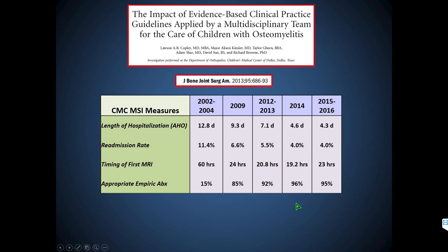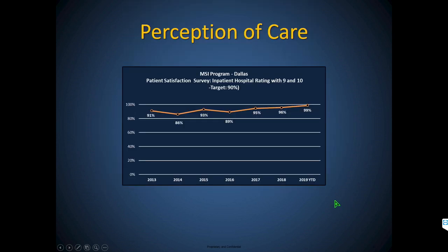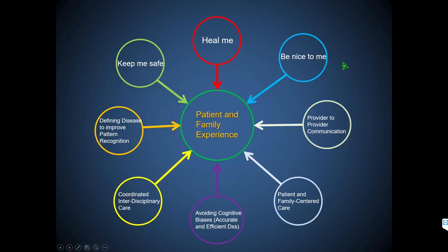Since implementing patient and family centered care with better understanding of disease processes and improved care processes, we radically reduced length of stay to as low as 4.3 days, cut readmission rate and kept it low, continue getting MRIs using our process, and improved both selection of appropriate empiric antibiotic and timing of administration. Families like this program — in 2013 we started the NRC Picker satisfaction survey, and we've continued to improve the percentage of families who rate hospital care as exceptional.